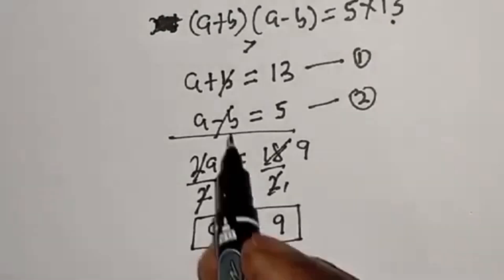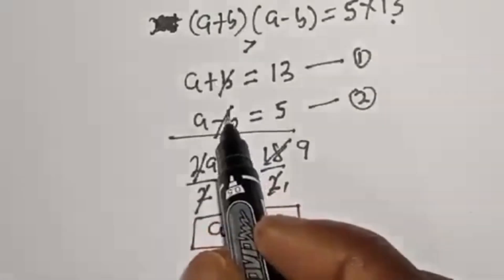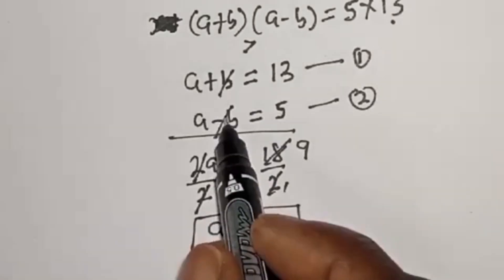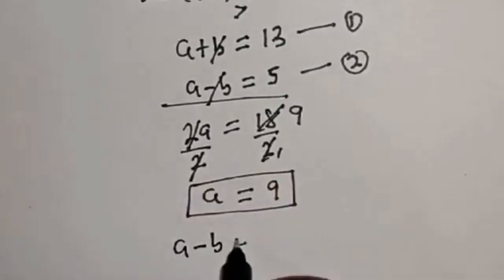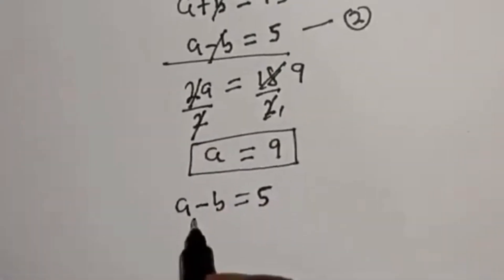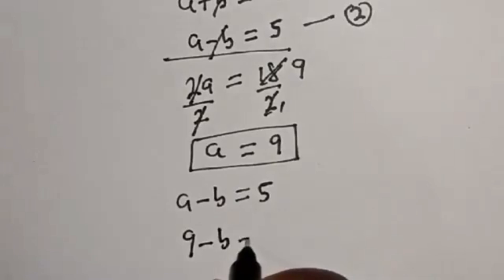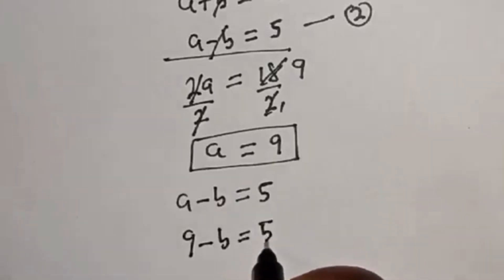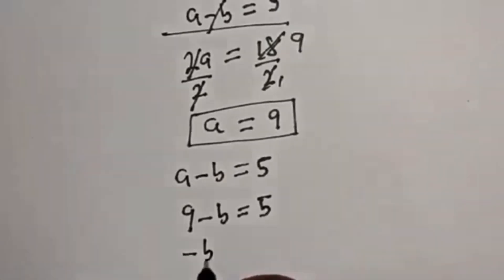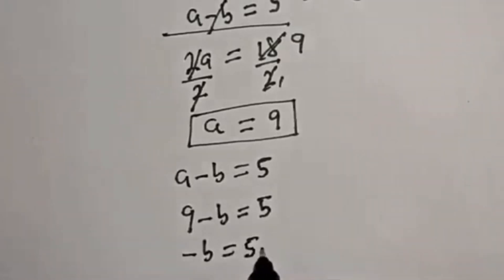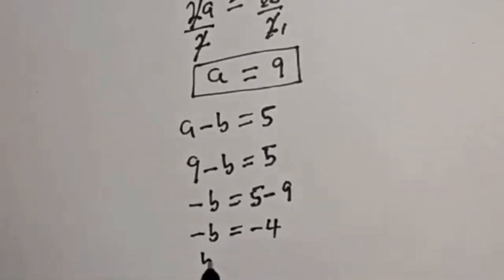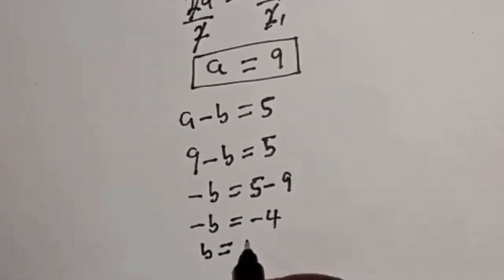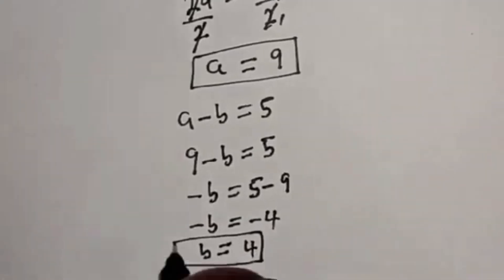Now we can solve for b. Using equation 2, a minus b equals 5, substituting a equals 9, we get 9 minus b equals 5. So minus b equals 5 minus 9, which gives minus b equals minus 4. Therefore, b equals 4.